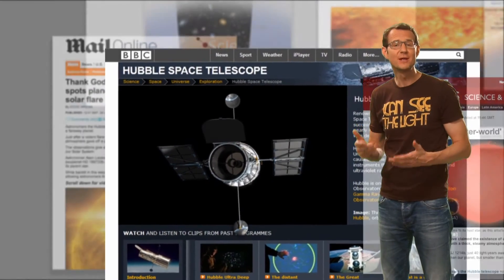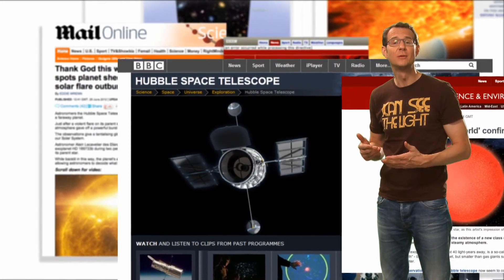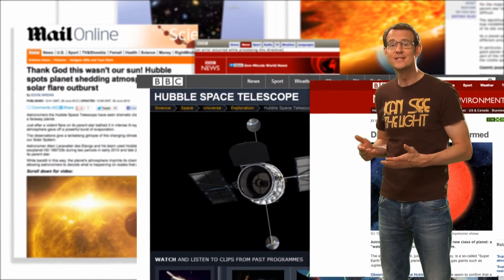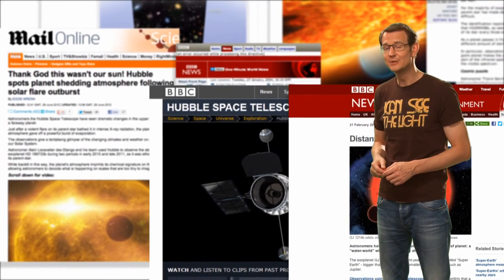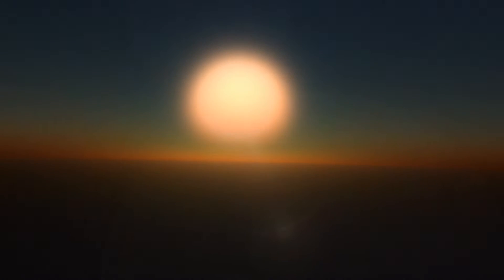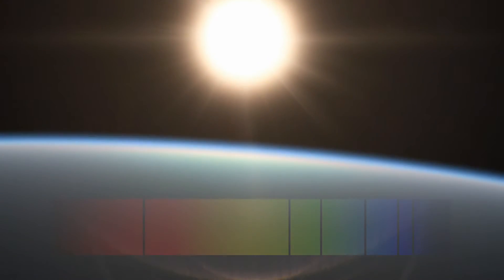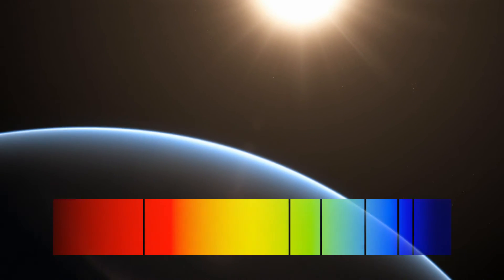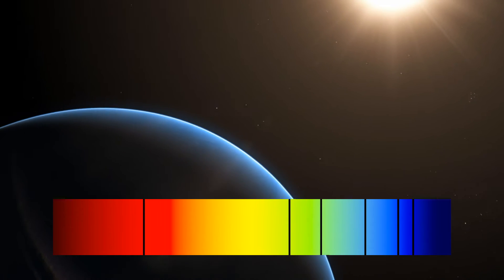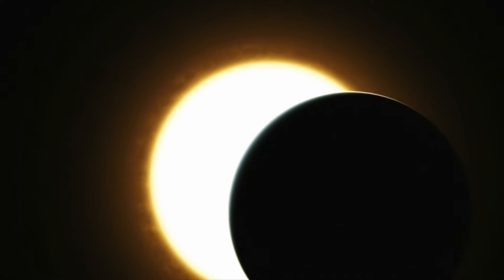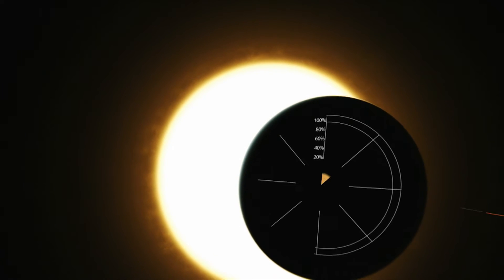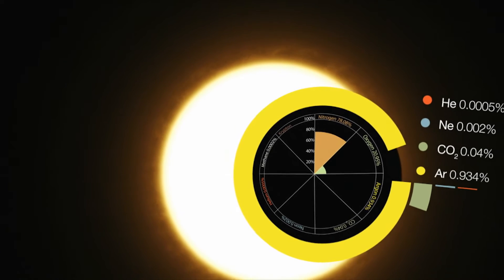It is these measurements that lie behind some of Hubble's most fascinating discoveries, such as the detection of different gases in the atmospheres of exoplanets. As a star's light passes through an exoplanet's atmosphere, the chemical signature of the atmosphere is imprinted on the light as dark lines in its spectrum. These lines tell scientists precisely what gases are present in the planet's atmosphere.